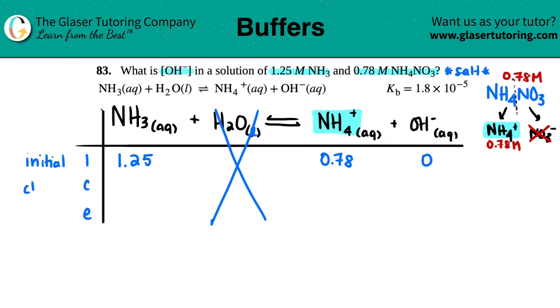C stands for change, change in concentration. Since I have an OH- that started with nothing, that means the only way that the products can go is up. So the product side would be a plus, and the reactant side would be minus. We don't know the change at the moment, so we just say x. E stands for equilibrium, where you're just pulling together your initial with your change. So 1.25 minus x is just 1.25 minus x. 0.78 plus x is 0.78 plus x. And then 0 plus x is just x.